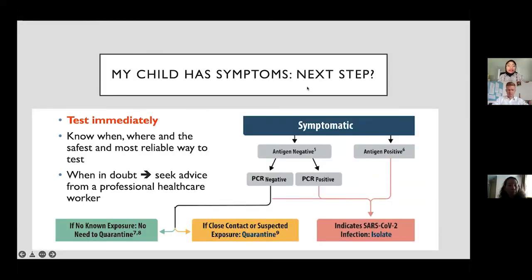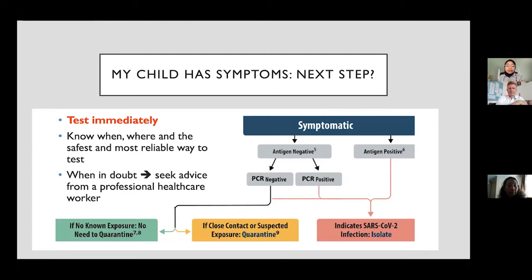If a person or child has symptoms, the next step is to test them immediately. According to this CDC algorithm, if a person has any of the symptoms previously mentioned, the easiest and fastest way to test is by doing an antigen test. This test can yield rapid results within a few minutes — ideally 15 minutes of waiting.